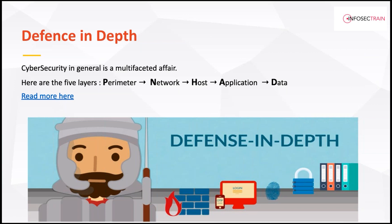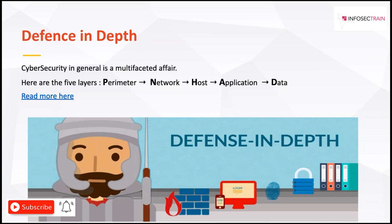The ministry explained to the king why defense in depth is needed: stationing five people outside your perimeter is never enough. You need to cover all threat vectors — all areas from which an attack can come in. The king was convinced and agreed to set up the full layered defense. That is how we explain defense in depth in cyber security.